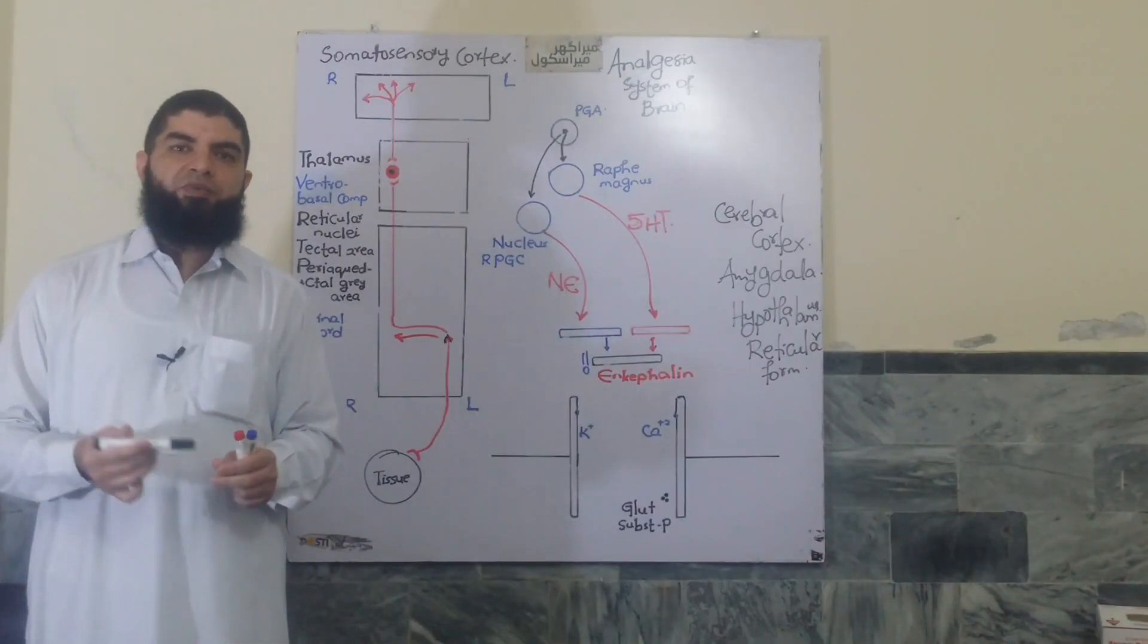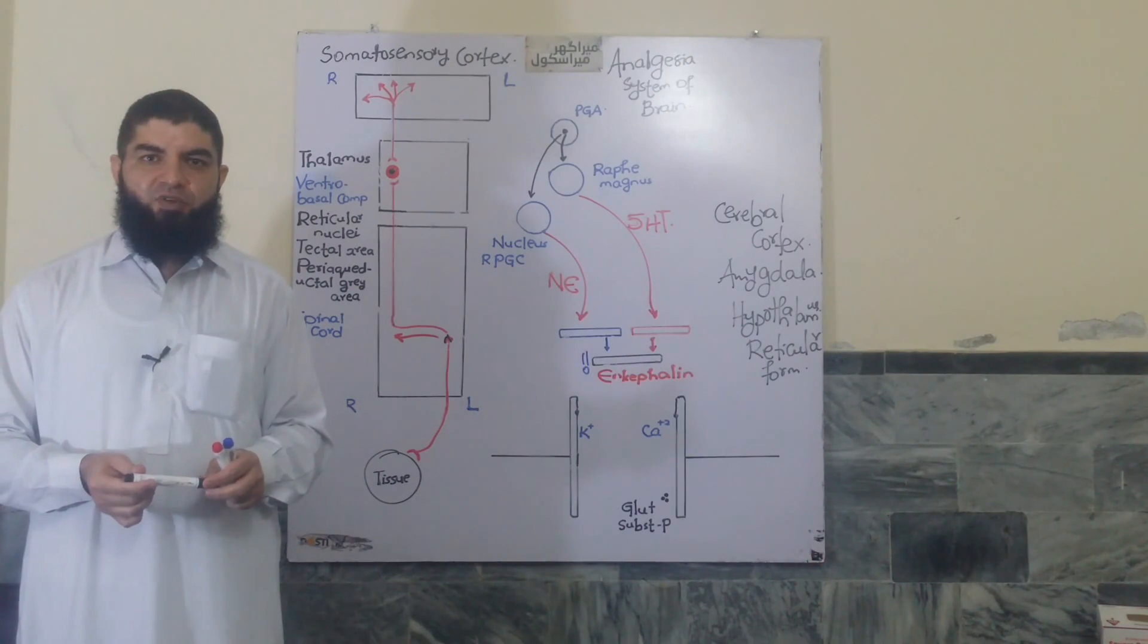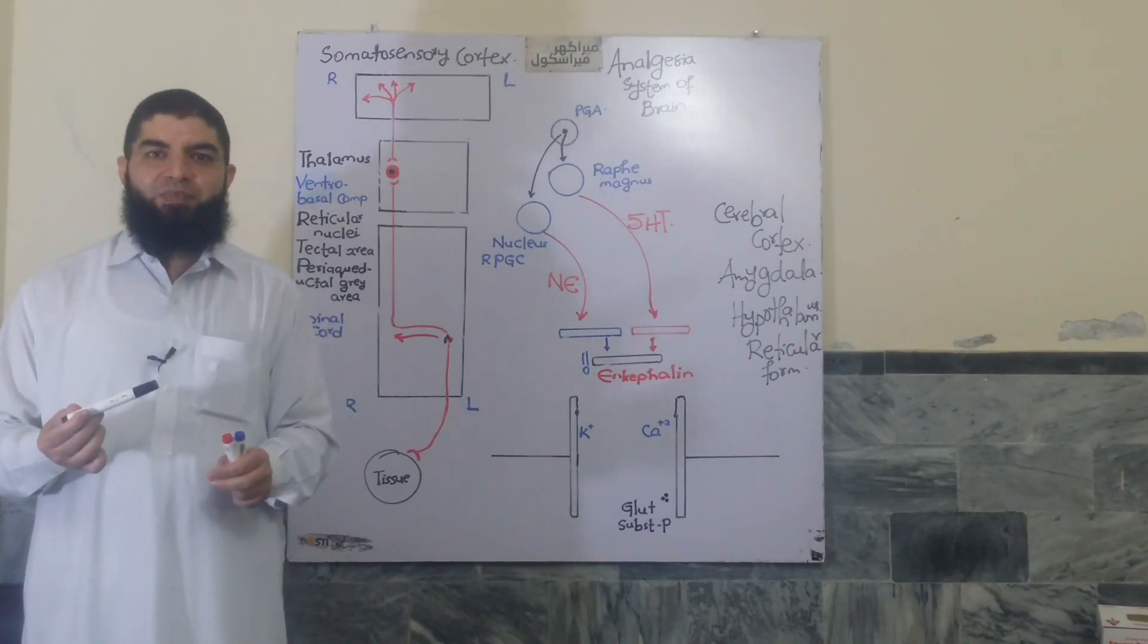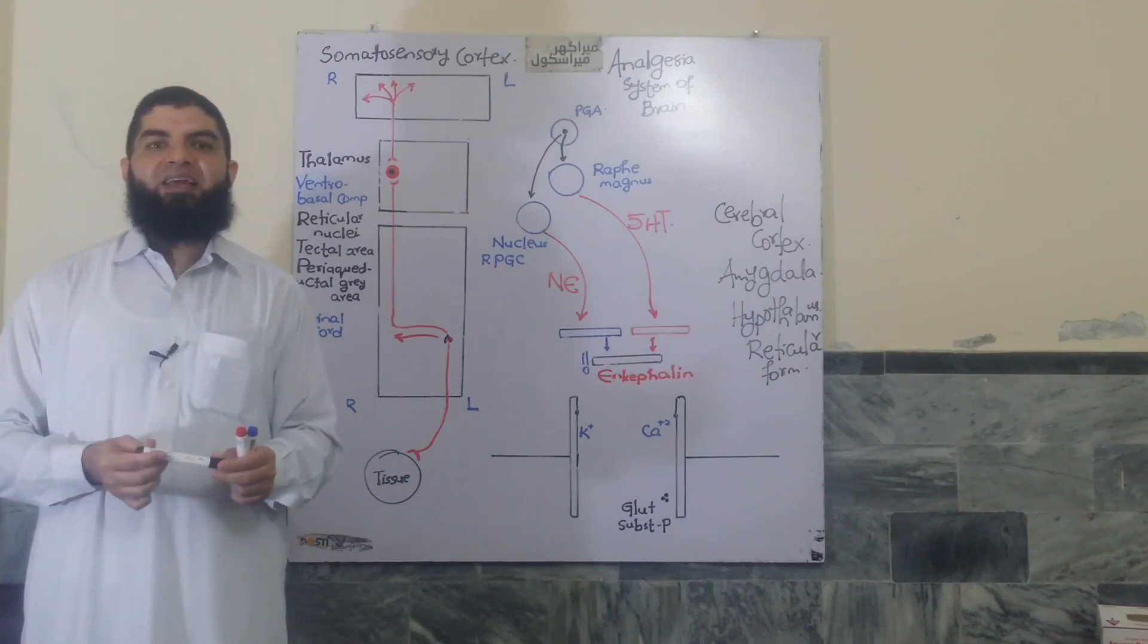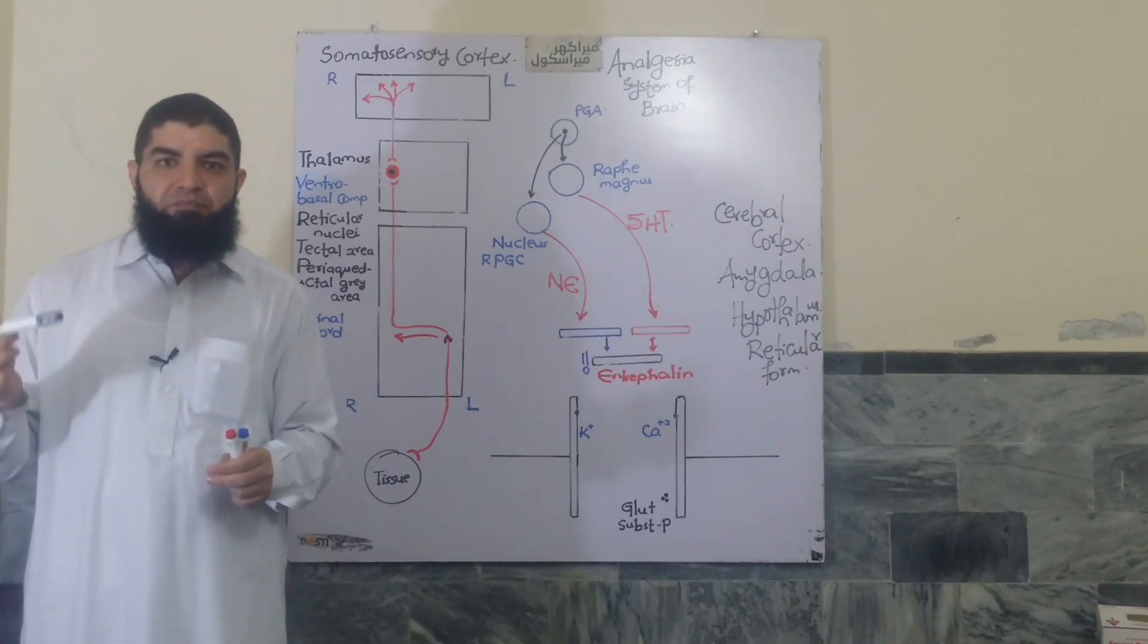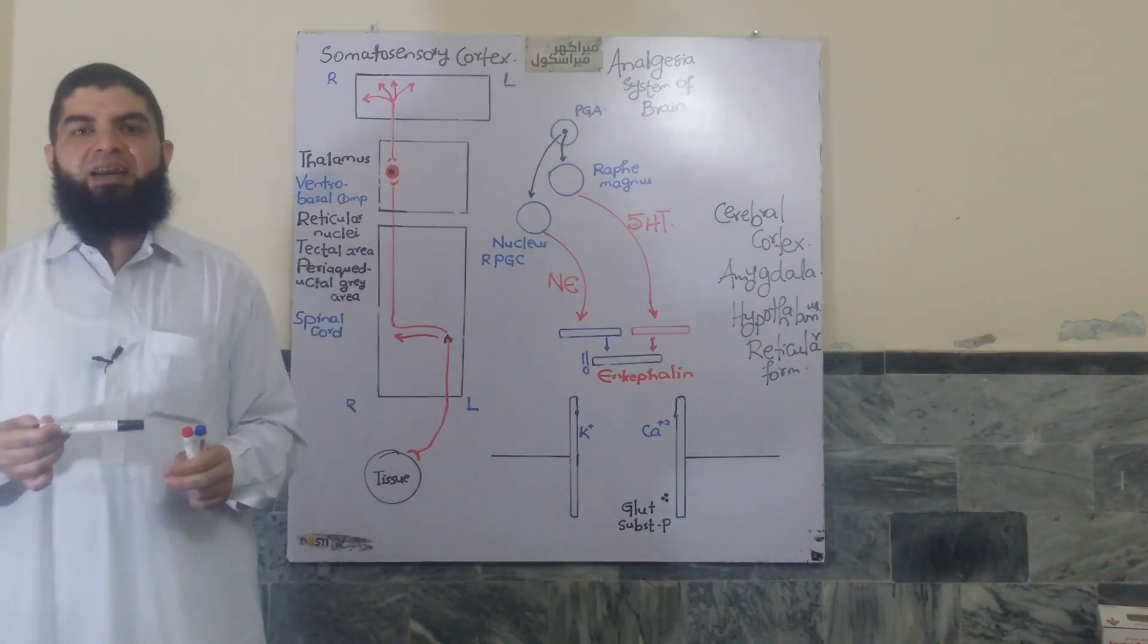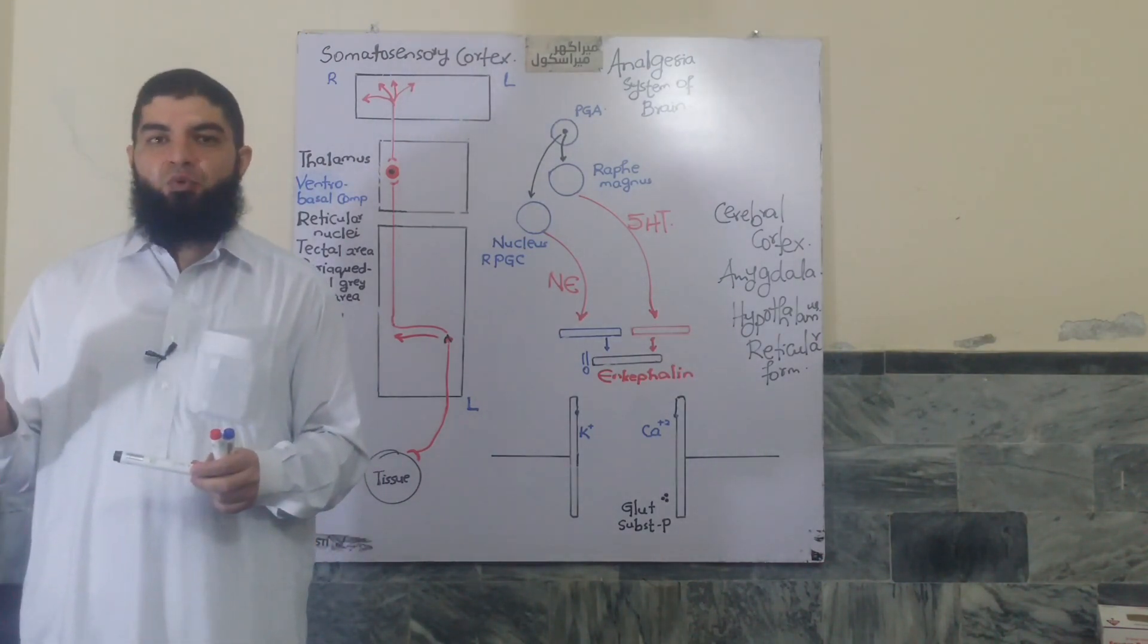Here we move on to the brain analgesia system. To begin with, pain is a protective response in first place. That informs the brain of any ongoing or impending tissue damage, so that the brain can devise a solution.